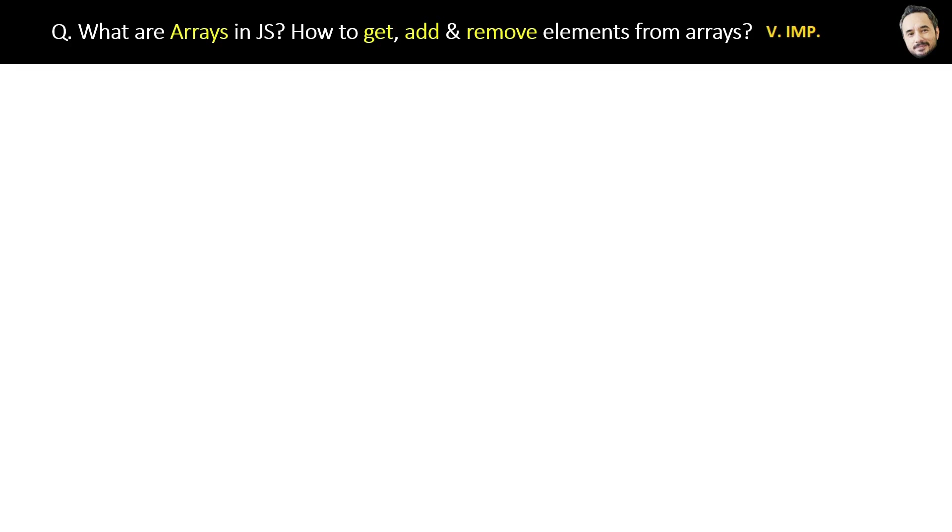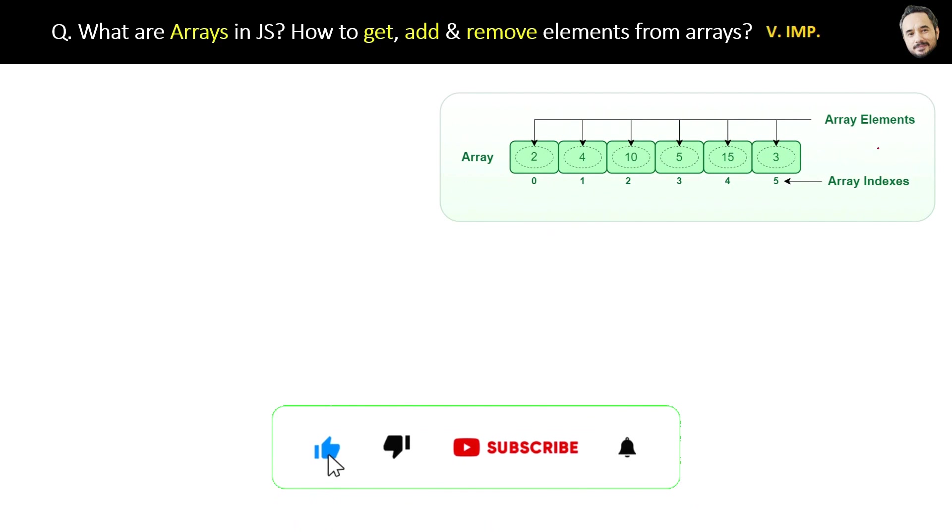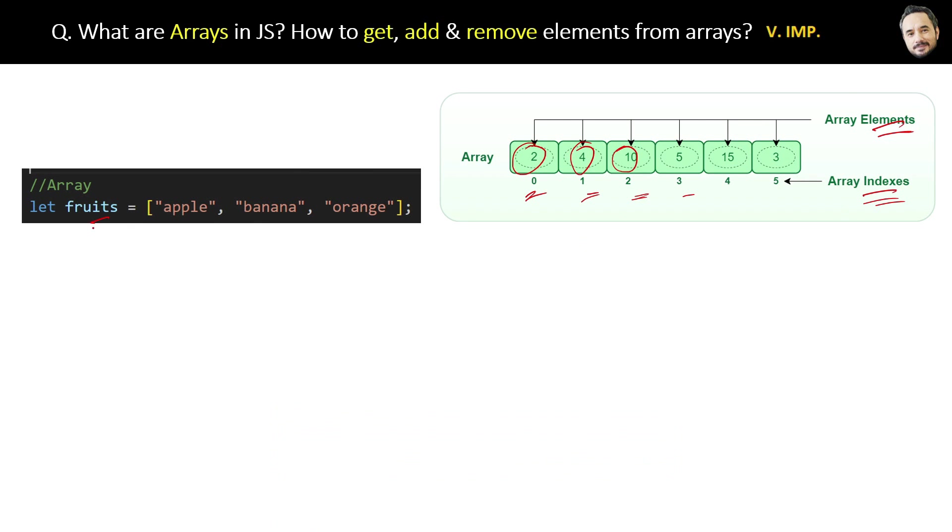What are arrays in JavaScript? How to get, add, and remove elements from arrays? A very basic and important question. Here is a simple array holding the array elements, and below is the index of the elements by which we can access those elements. Like this code, we can declare an array in JavaScript. Fruits is an array data type and it contains multiple elements inside it like apples, bananas, oranges, etc.